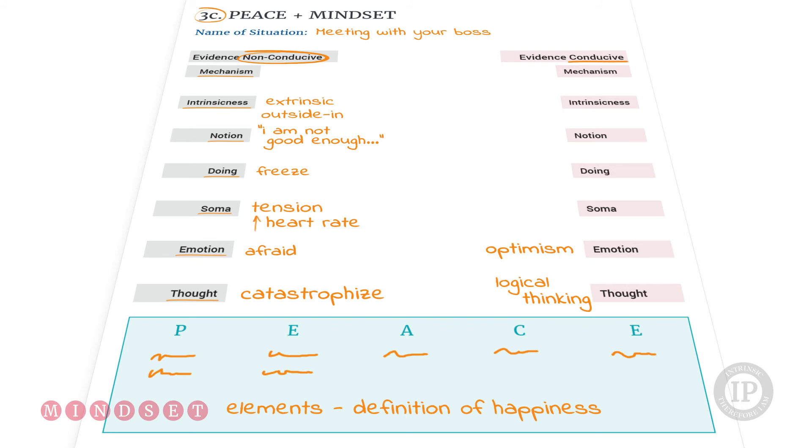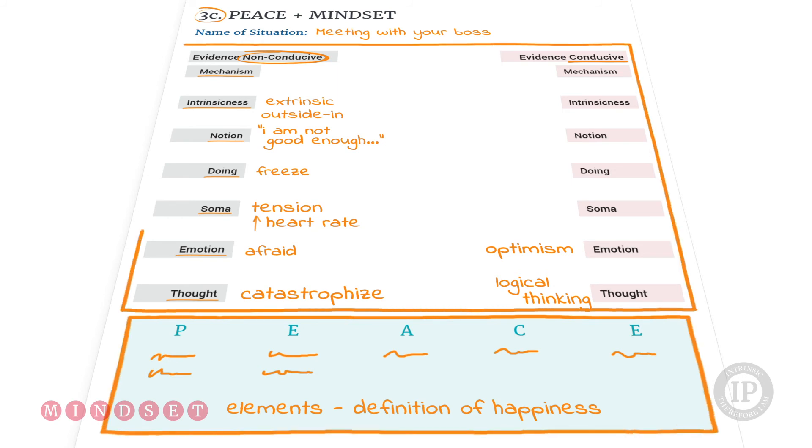So that's an example of how you may use both knowledge of yourself, your definition of happiness, and knowledge through observation and notes about yourself during the situation.